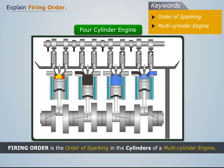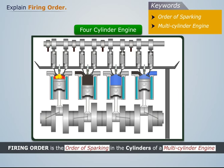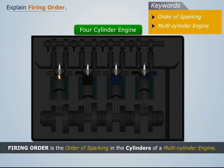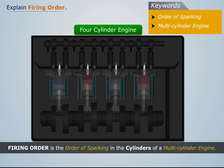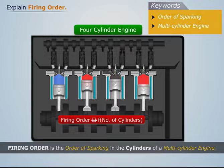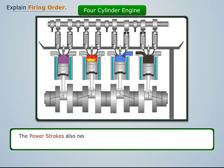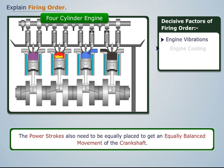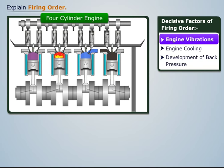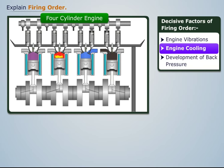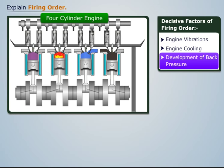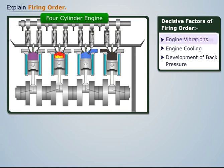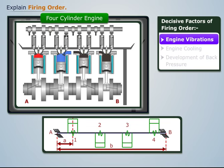We can define firing order as the order of sparking in the cylinders of a multi-cylinder engine. Firing order of an engine depends on the number of cylinders in the engine. The power strokes also need to be equally placed to get an equally balanced movement of the crankshaft. The three main factors affecting the firing order are engine vibrations, engine cooling, and development of back pressure.